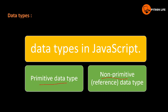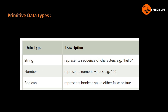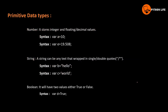String represents a sequence of characters — for example, 'hello'. Number represents numeric values — for example, 100. Boolean represents boolean values, either true or false. Number can also store integer or floating-point decimal values — for example, a variable equal to 19.508.